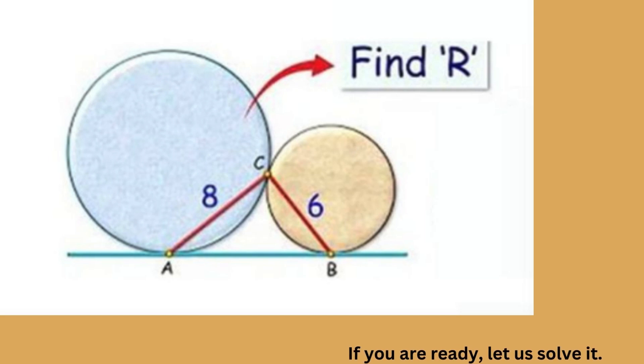Two unequal circles are arranged as shown. If line AC equals 8 units and line BC equals 6 units, what is the radius R of the larger circle?